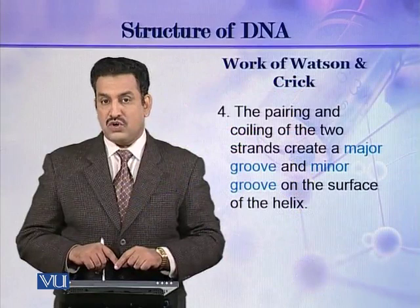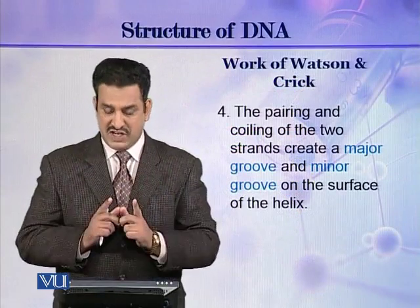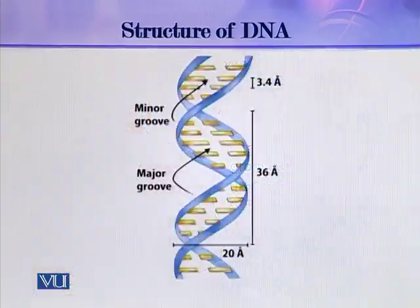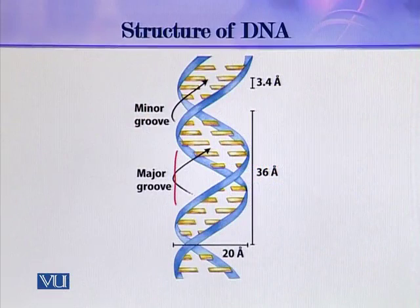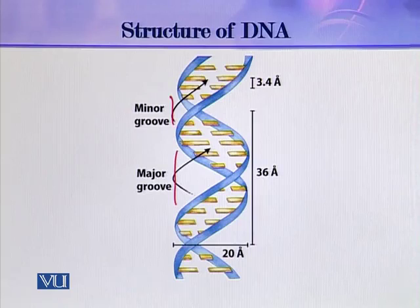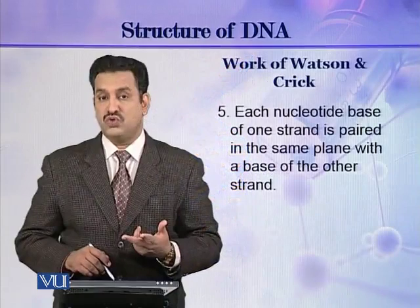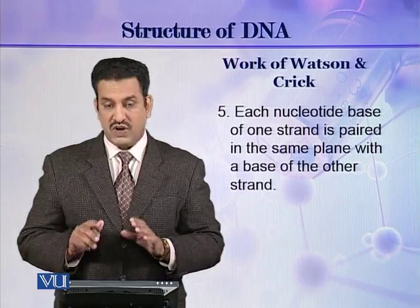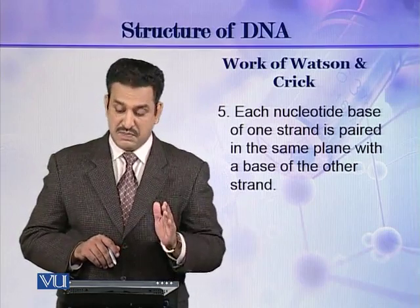The pairing and coiling of the two strands of DNA create a major groove and a minor groove on the surface of the helix. As you can see in this picture, this is the major groove and this is the minor groove. These two grooves are formed because the two strands join together and then coil around an imaginary single axis, forming the major groove and the minor groove.